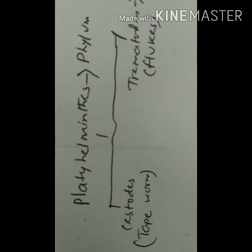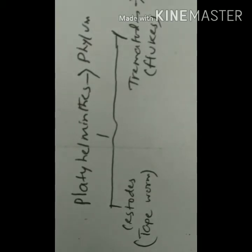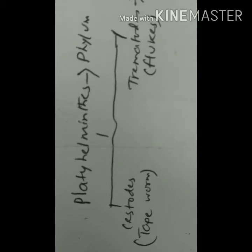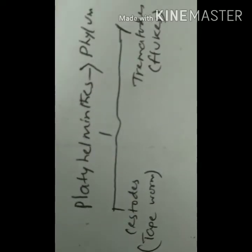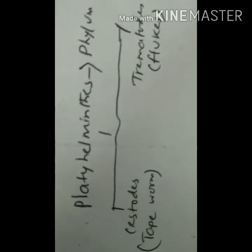The helminthic parasites or Metazoa can be classified into two important phyla: one is Platyhelminthes and another one is Nematodes. Platyhelminthes are usually called the flat ones — their body looks flat, not rounded. Nematodes are the round ones — their body looks rounded.